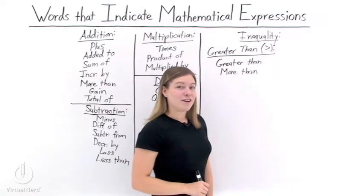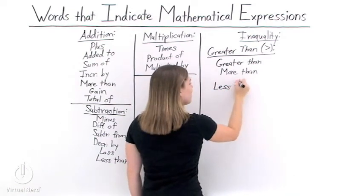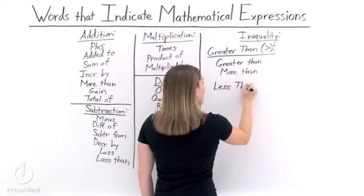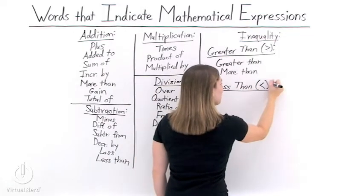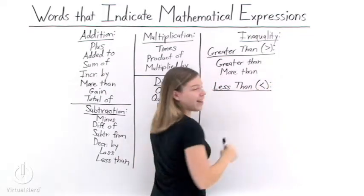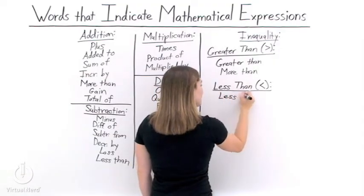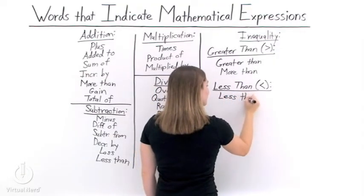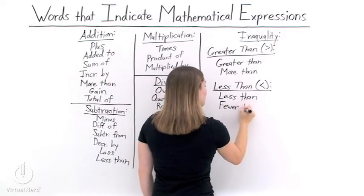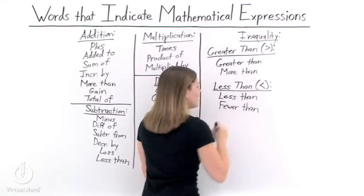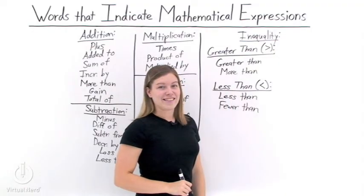Now the opposite of greater than is less than. A less than symbol looks like a left-pointing arrow without the line. Words that mean less than include 'less than' and 'fewer than.' So we have two inequalities: greater than and less than.